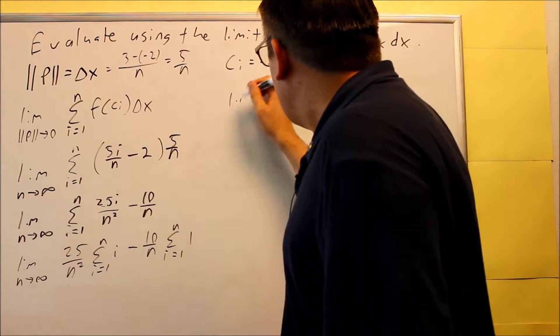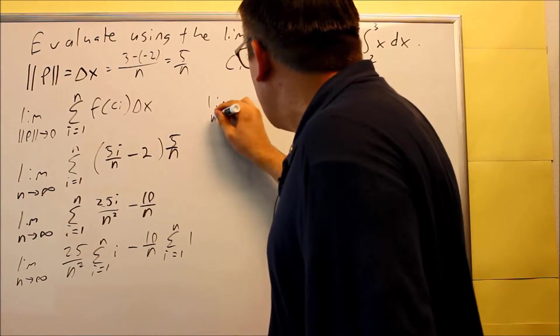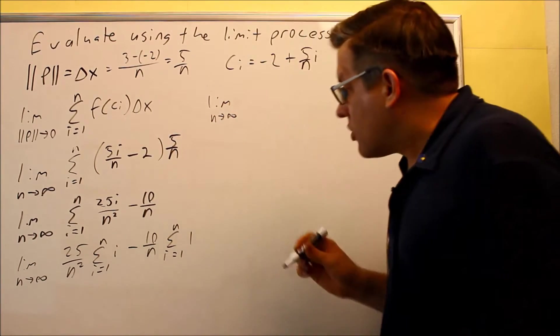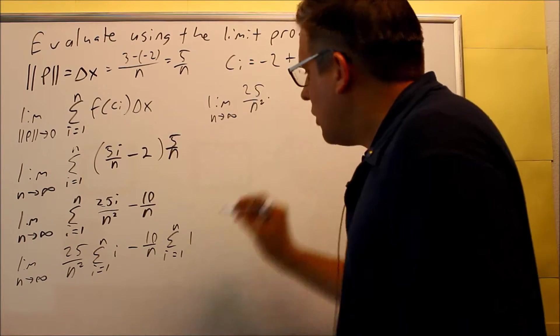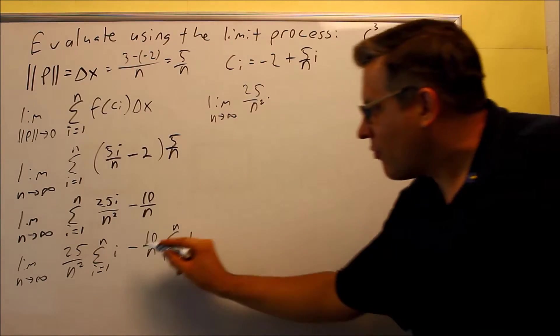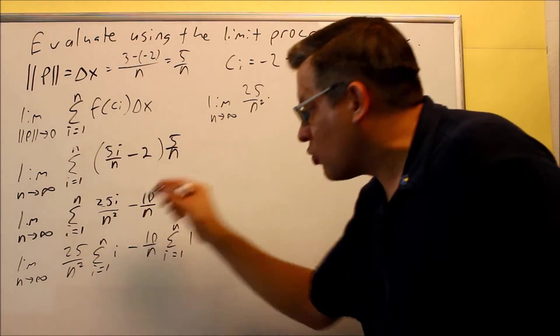Okay, so we're going to do limit as n goes to infinity. All right, so I'm going to do 25 over n squared. And I want to put in the sum formula that we talked about in the previous section for this right here. The summation, i equals 1 to n. That has a special formula.